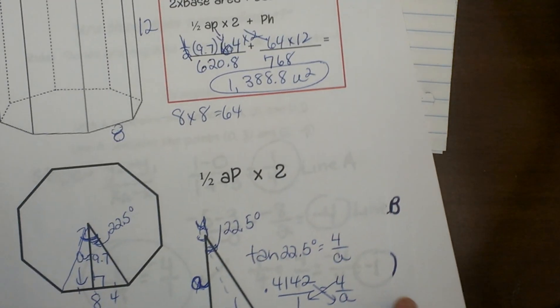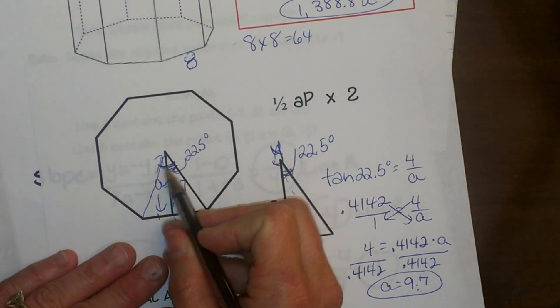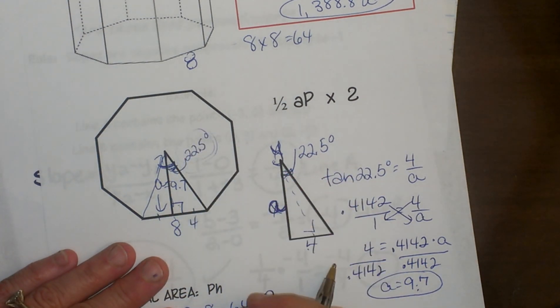Now a couple of helpful hints when you're doing an octagonal prism: your central angle is always going to be 45, and when you slice it in half you're always going to use 22.5. If you have any other shape besides an octagon, let's say a pentagonal prism...